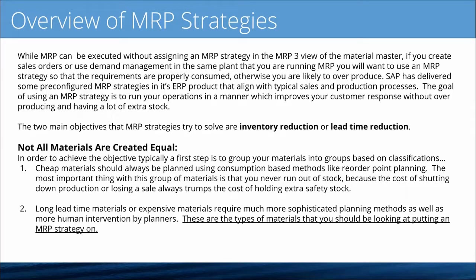The second type of material is one that has a really long replenishment lead time or is a very expensive material. These particular types of materials require a more sophisticated planning method as well as a lot more human intervention by the planners. These are the types of materials that you should be looking at putting an MRP strategy around.